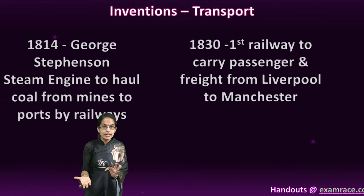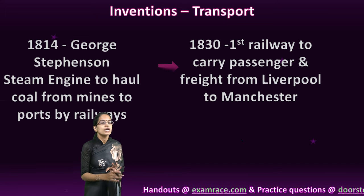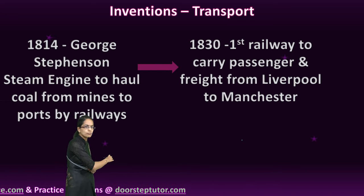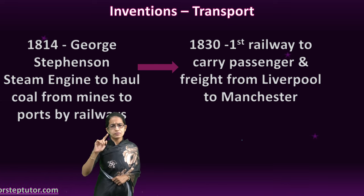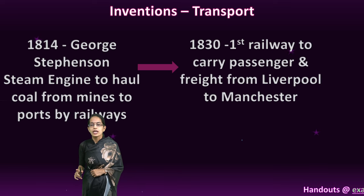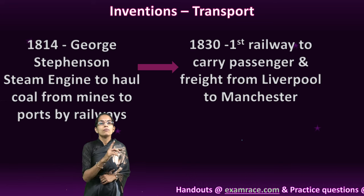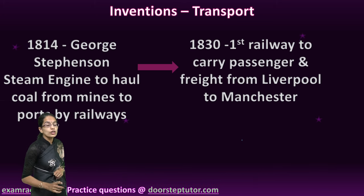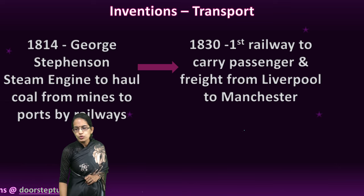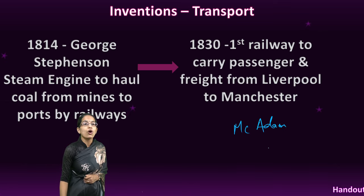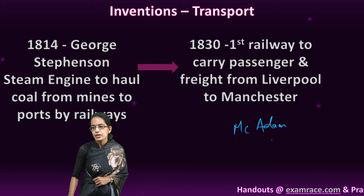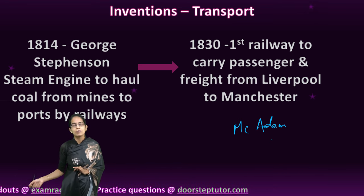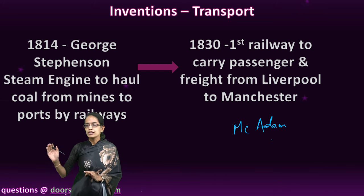Whatever was produced needed to be marketed and sold, so transportation became the next important thing. George Stephenson started a steam engine to take coal from the mines to the port via railway line. In 1830, the first railway was used to carry both passengers and freight from Liverpool to Manchester — the first development in the transport system. Later, roads improved, canals were dug, and macadamized roads — what we now call paved roads — were developed, further strengthening infrastructure and expanding transportation to the periphery.